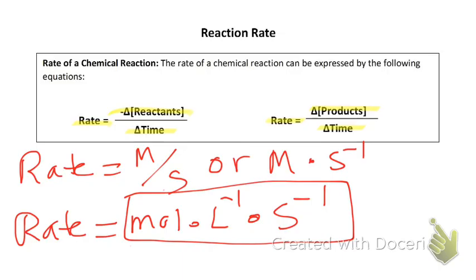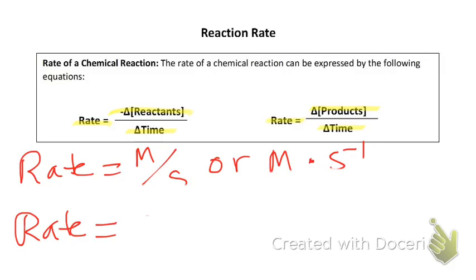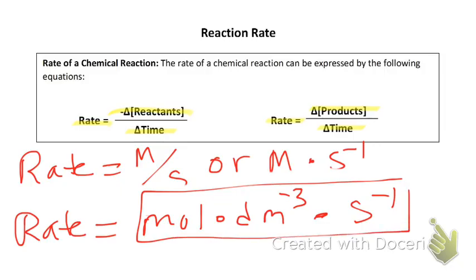And these are often the units that we're going to see for rate, especially if you're an IB student or an AP student. If you're an IB student, the units that you would see would look something like moles, but now it's going to be cubic decimeters to the minus three because we'll take the reciprocal times second to the minus one. And so the units that I'm boxing here are very important for you IB students to know. So those are the units for rate and the equations to determine the rate of a reaction.